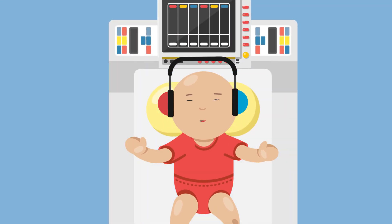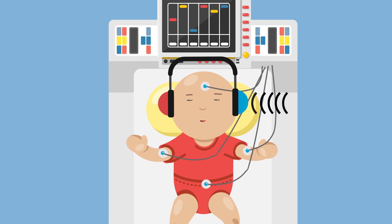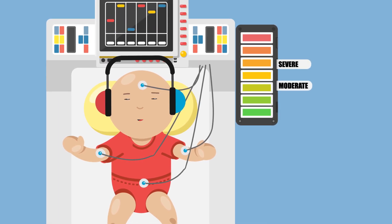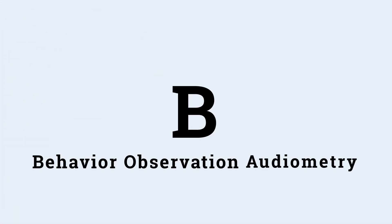A normal hearing infant can be aroused twice when 3 such stimuli are presented to him. Auditory Response Cradle is a screening device for newborns where the baby is placed in a cradle, and his behavior including trunk and limb movement, head jerk, and respiration in response to auditory stimulation are monitored by transducers. It can screen babies with moderate, severe, or profound hearing loss.